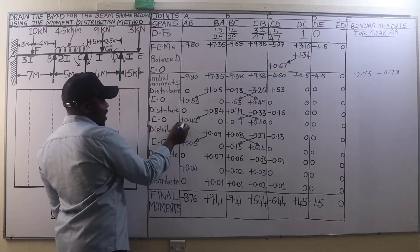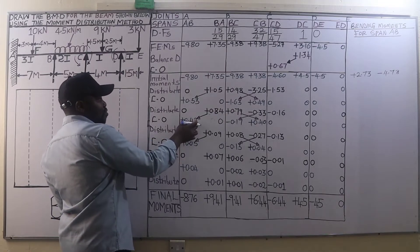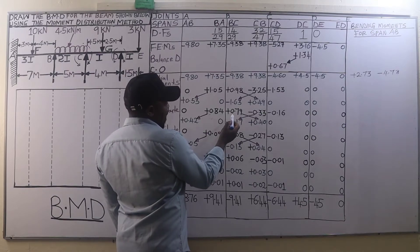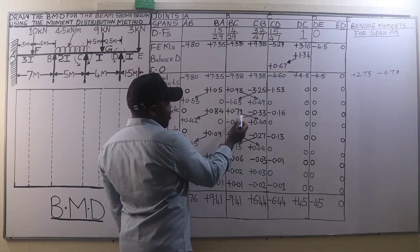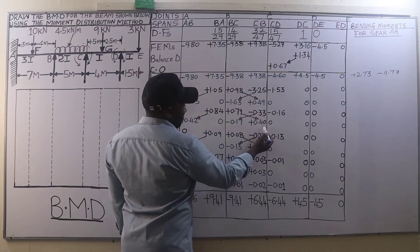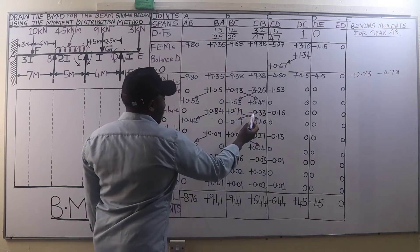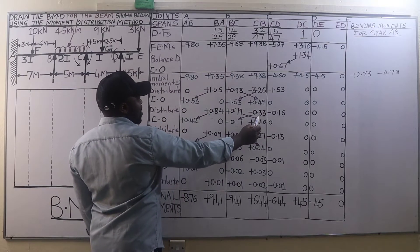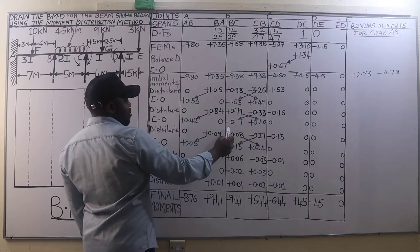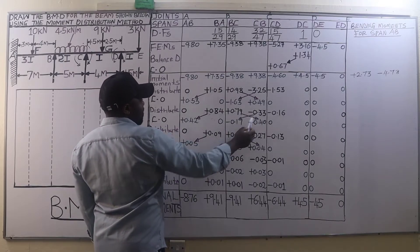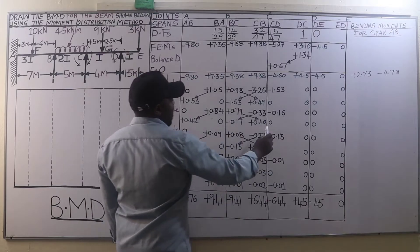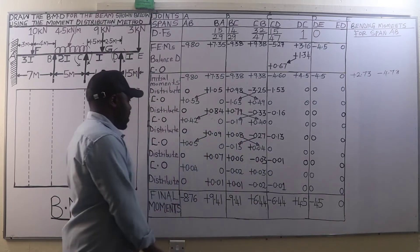After distributing we carry over. Carry half of 0.84 from joint B to joint A, which is 0.42. Carry half of 0.79 from joint B to joint C, which is 0.40. Carry half of negative 0.33 from joint C to joint B, which is negative 0.17. The others are zeros.